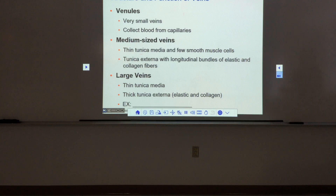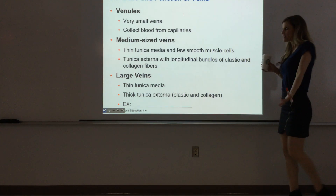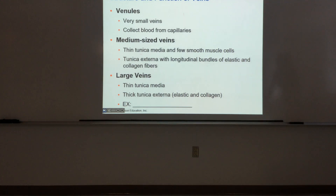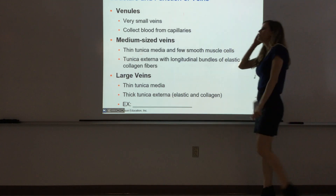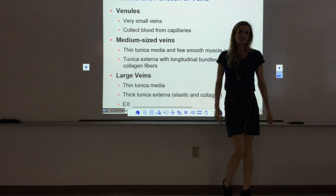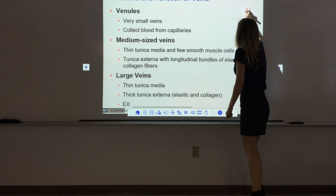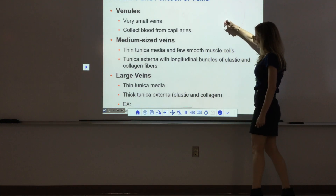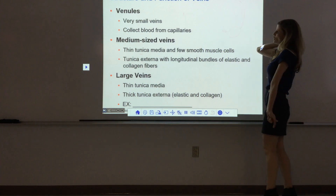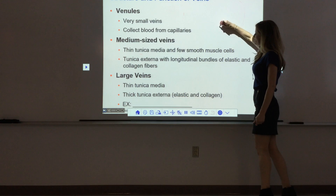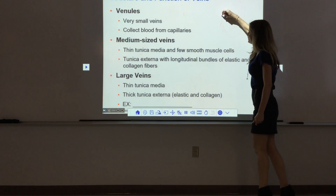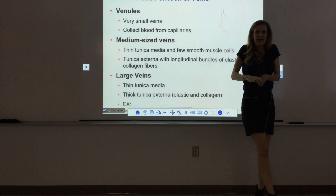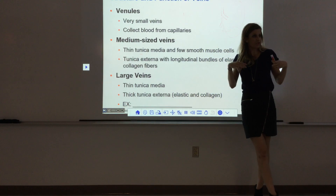We can classify veins according to their size, similar to how we broke arteries into three major categories. We have venules, medium veins, and large veins. Venules are the smallest veins — after arterioles lead to a capillary bed, the vessel that collects blood out of the capillary bed is a tiny venule. Many venules merge to form larger vessels called medium-sized veins. Most veins in the body are medium-sized veins, and they correlate roughly with the muscular arteries.